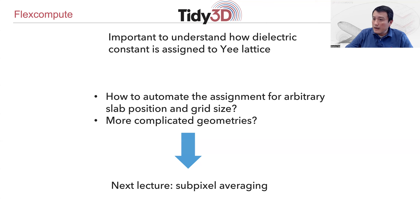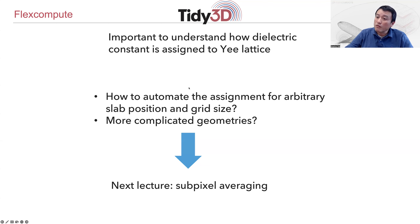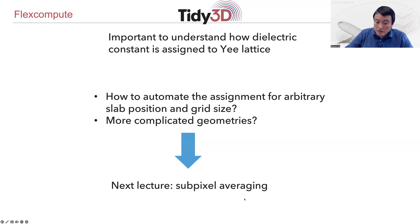It would be very desirable to have an FDTD algorithm that does not suffer from this kind of consideration and subtlety. We're going to talk about this algorithm next time — this lecture in many ways provides the motivation for thinking about those kinds of algorithms. The algorithm we'll be talking about is subpixel averaging. Thank you for listening.